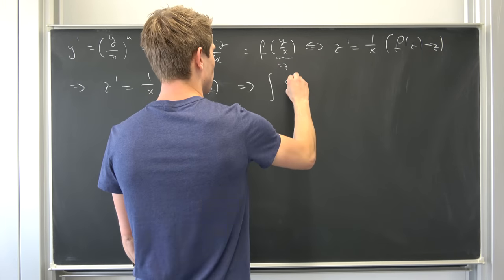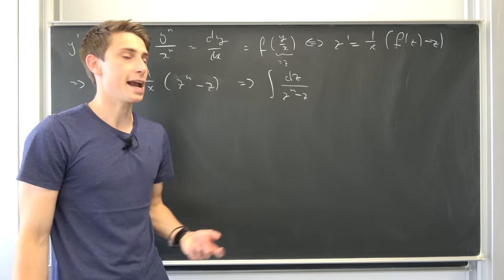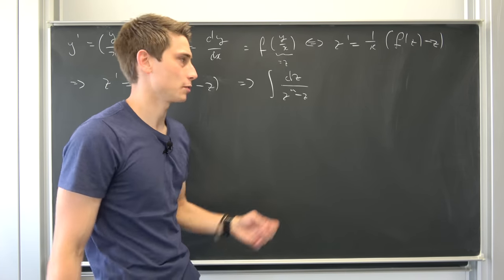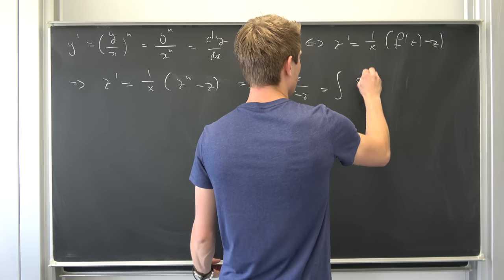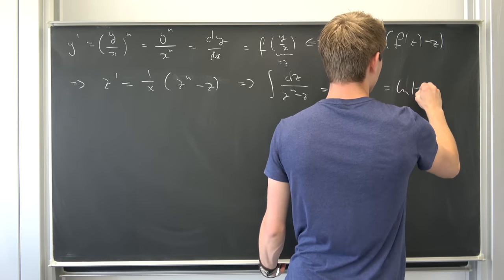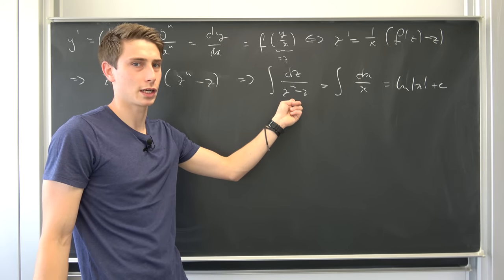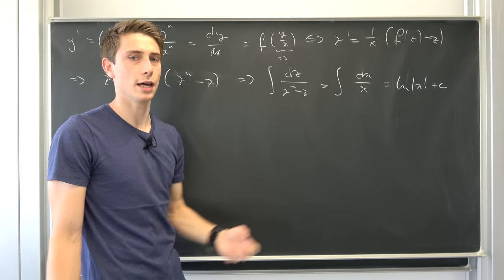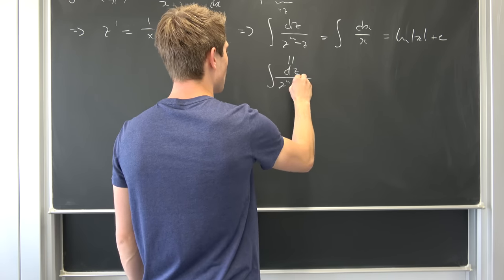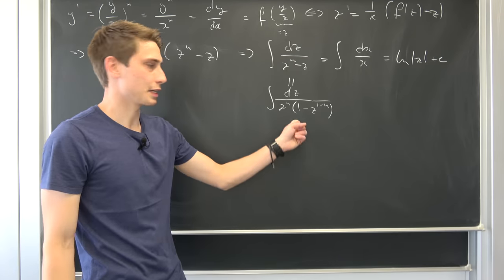We end up with the integral of dz over (z to the nth power minus z) equal to the integral of dx over x. The right-hand side evaluates to the natural log of x plus an arbitrary constant c. To handle the left side, factor out z to the nth power in the denominator, giving the integral of dz over z to the nth power times (1 minus z to the (1 minus n) power). Integrating this is quite easy with a proper substitution.